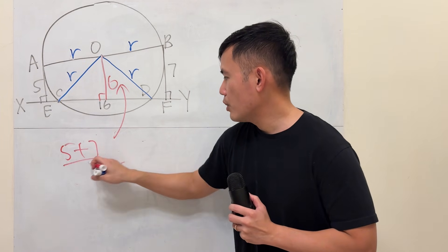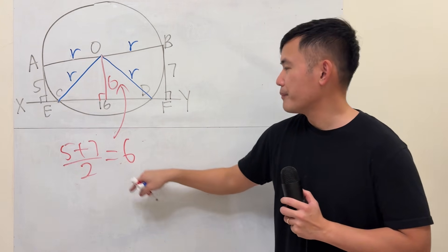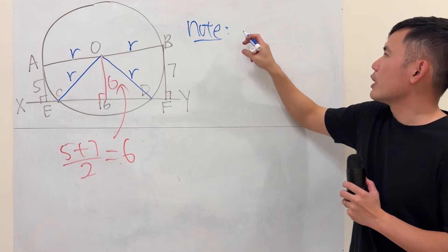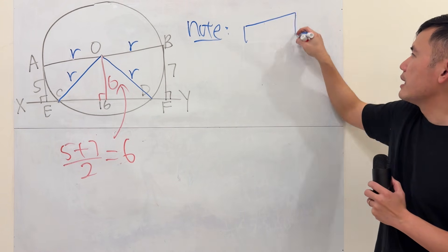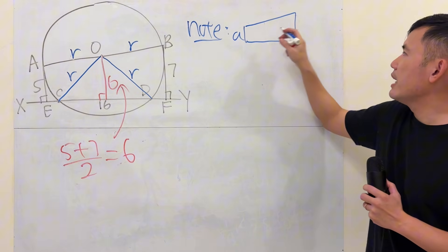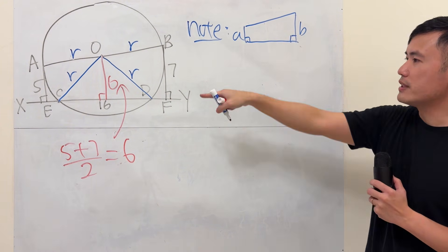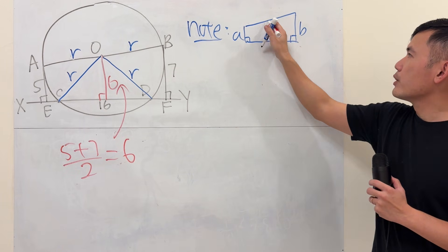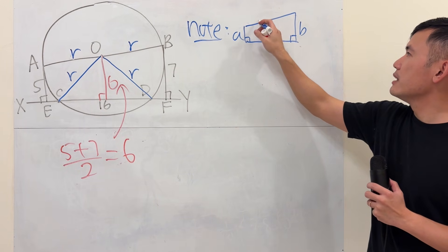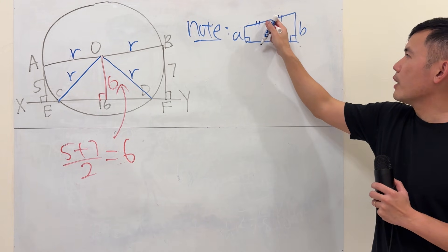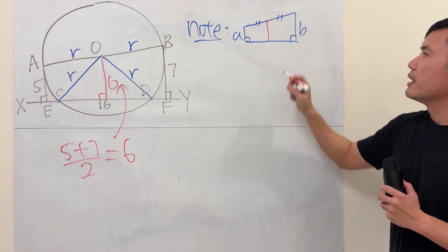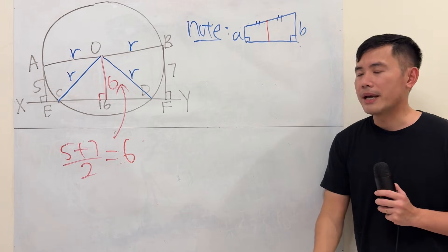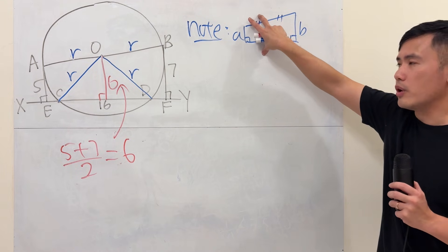So let me just write that down. It's just 5 plus 7 over 2, that's how we get the 6. And let's talk about why. Note, if we have a trapezoid, let's say like this. So this is a, this is b, they are both perpendicular just like that, so this and that are parallel. Now if I go to the middle right here, let's say this is congruent to that, and if we also drop down perpendicular, I claim that this is just a plus b over 2.